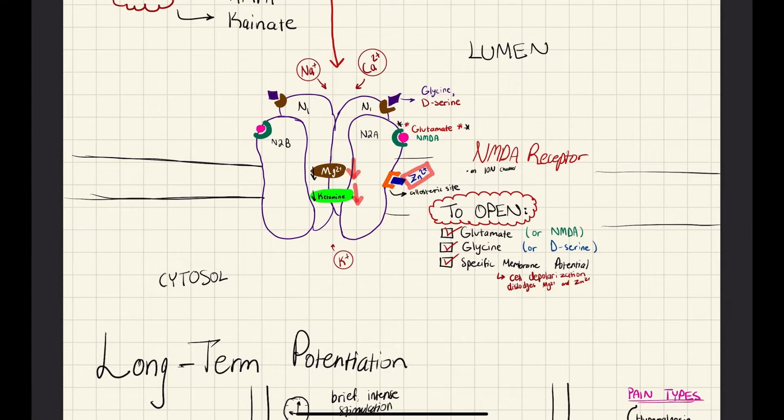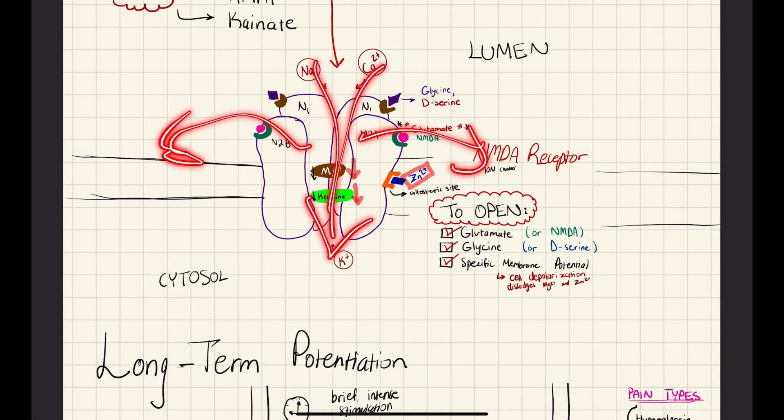But what you should really take away from this is that to open, you need three things. You need glutamate or NMDA. You need glycine or D-serine. And then you also need a specific membrane potential. And you might be wondering why. Well, that membrane potential actually dislodges certain metallic ions, such as zinc or magnesium. And that's actually what allows the channel to open and for these cations to flow through.